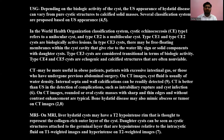Several classification systems are proposed based on ultrasound appearance. In the WHO classification system for cystic echinococcosis: Type CE1 refers to unilocular cysts; Type CE2 is multilocular cysts; CE1 and CE2 are biologically active lesions. In Type CE3 cysts, there may be free-floating membranes within the cyst cavity giving rise to a water-lily sign and a solid component with daughter cysts. Type CE3 cysts are considered transitional in terms of biological activity. Type CE4 and CE5 cysts are echogenic and calcified structures that are often non-viable.